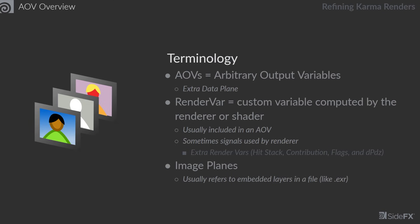A couple of examples of this within Karma are under the extra render vars settings in the Karma render settings node. We can find things like hit stack, contribution, flags, and the dpdz render var as well. Those are ones that if you try to put them into an AOV and take a look at them, you're not really going to get any useful data out of them.